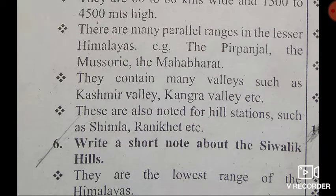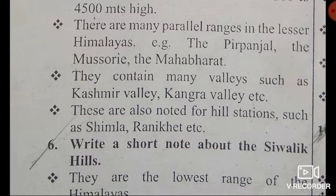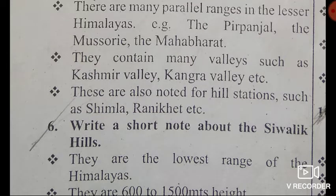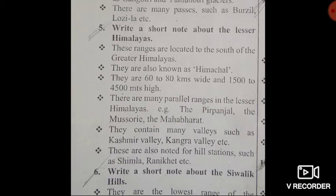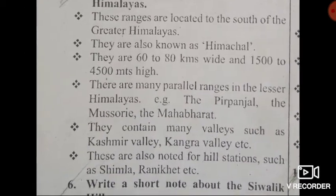Fifth point: they contain many valleys, such as Kashmir Valley, Kangra Valley, Kullu Valley, etc. Last point: these are also noted for their hill stations, such as Shimla, Ranikhet, etc. These are the features of the Lesser Himalayas.